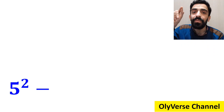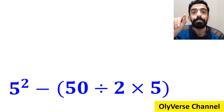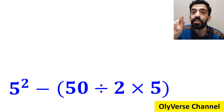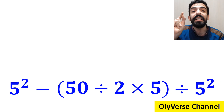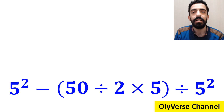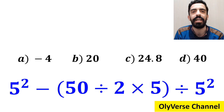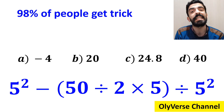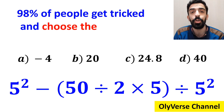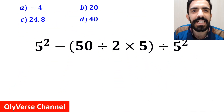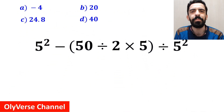What is the value of the expression 5 squared minus open parenthesis 50 divided by 2 times 5 close parenthesis, then divided by 5 squared? Which option do you think is the correct answer? 98% of people get it wrong and choose the wrong answer. Let's dive in and break it down step by step together.